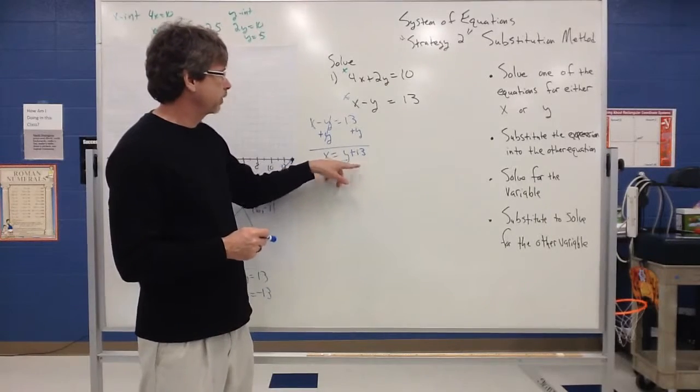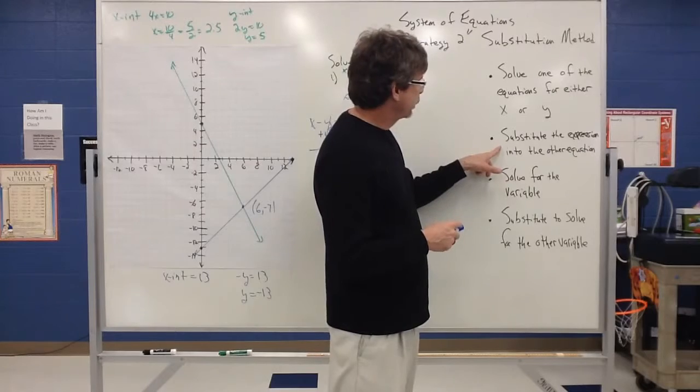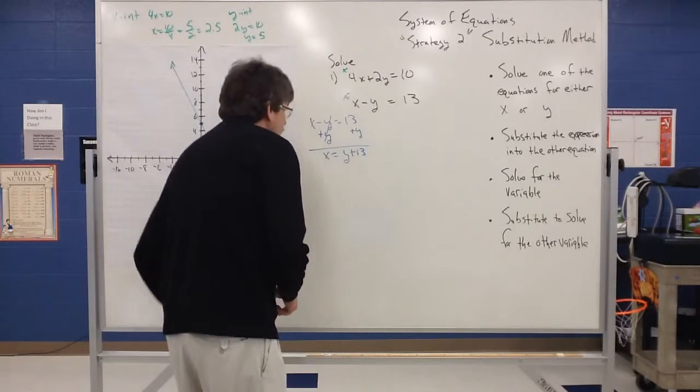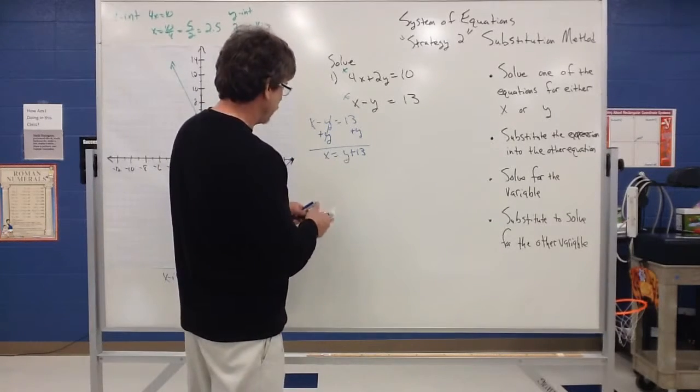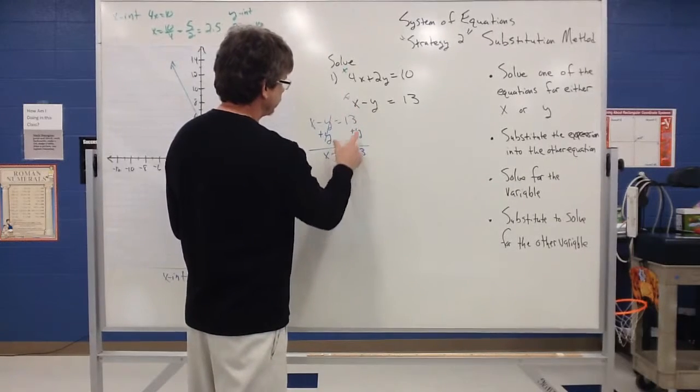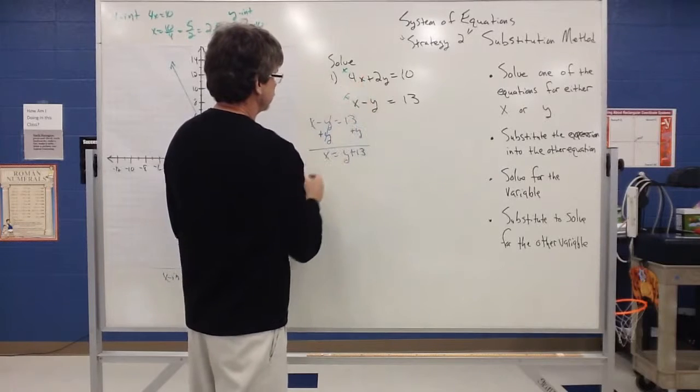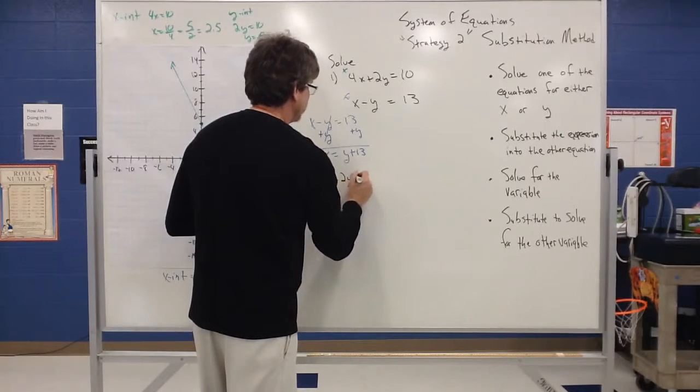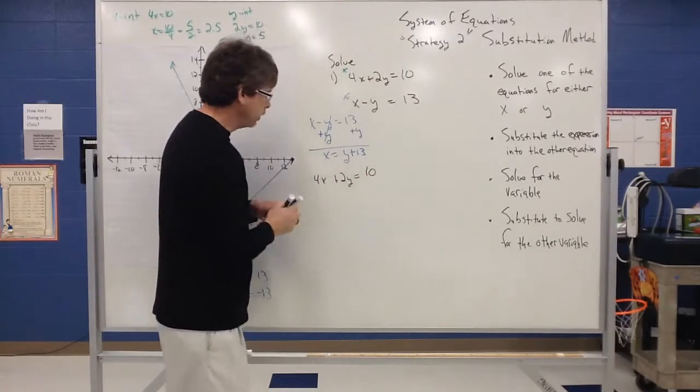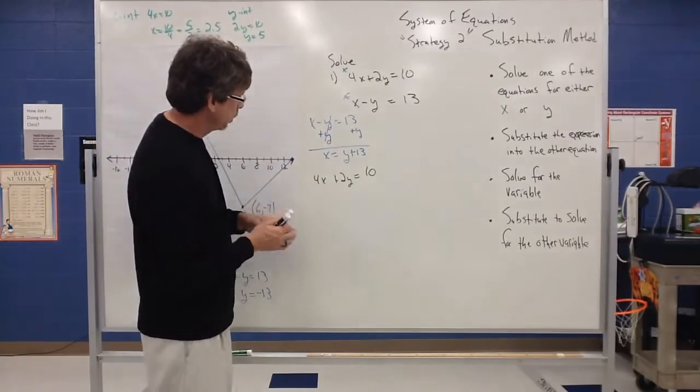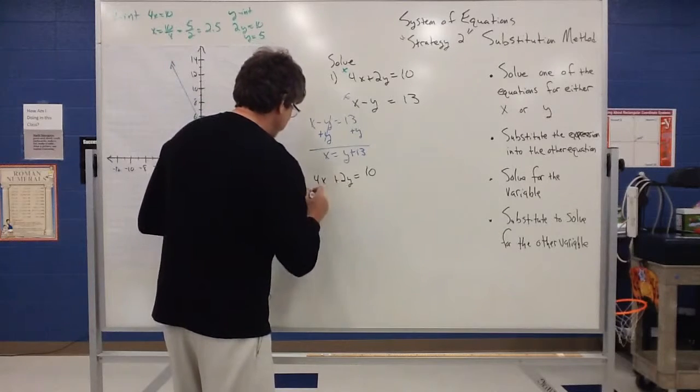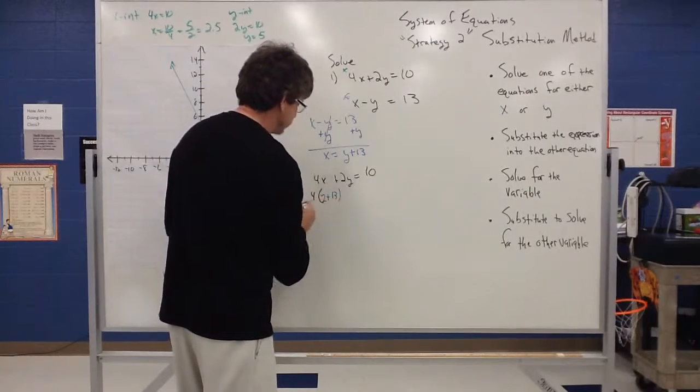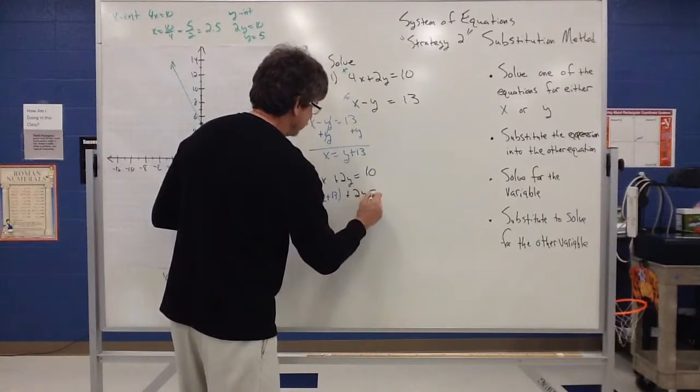So I've got my equation solved for x. You notice that it equals some type of expression. Now what I want to do is substitute the expression into the other equation. So what I'm going to do now, the other equation, see how x equals y plus 13? So what I'm going to do is, where there's this x, I'm going to replace that x with, I'm sorry, this equation up here, choose the other equation. So I have this equation of 4x plus 2y is equal to 10. And what I'm going to do is, since x equals y plus 13, I'm going to replace this x with y plus 13. So what I'm going to have then is, 4 times the quantity, y plus 13. And then I have then, plus 2y is equal to 10.